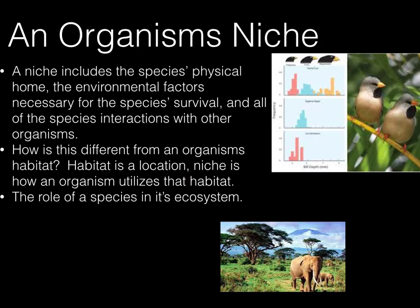So let's go ahead and get started. An organism's niche includes this species' home and environmental factors that help them survive within an ecosystem. An organism's niche is different than its habitat because its habitat is just talking about its home. The niche is how it interacts within this environment — with its habitat and with other species. It's basically the role of the species within its ecosystem.